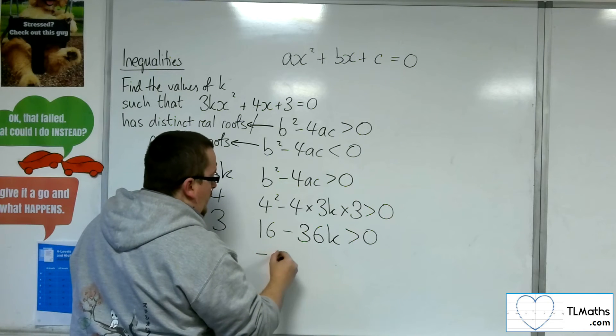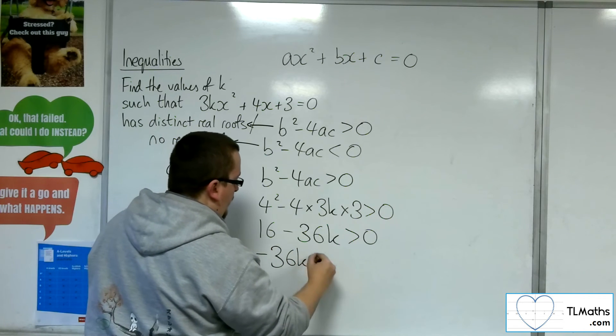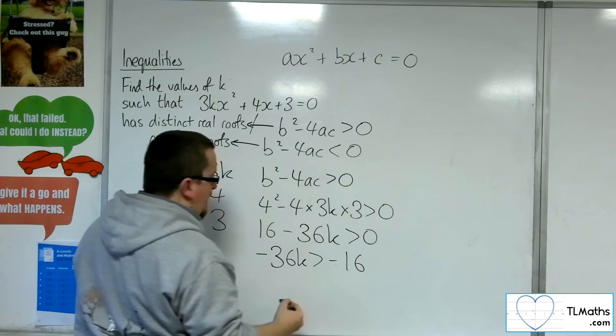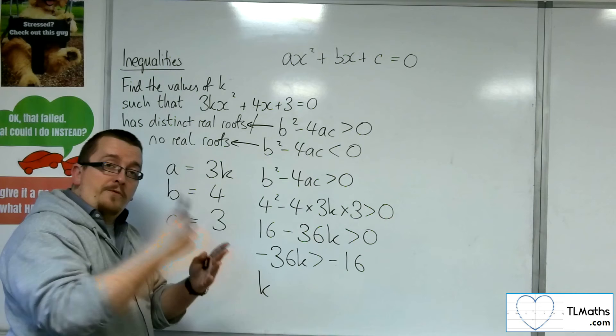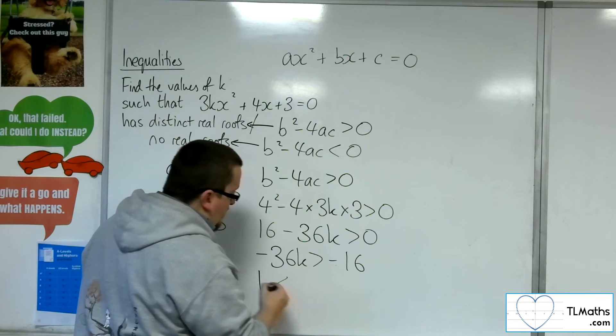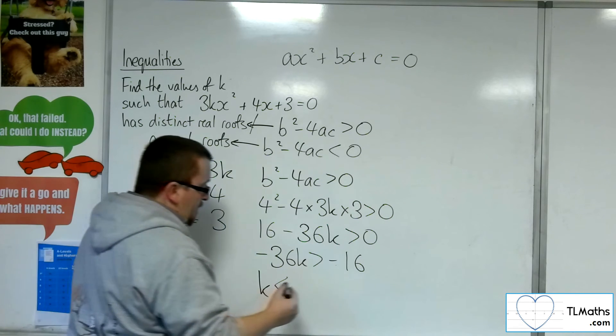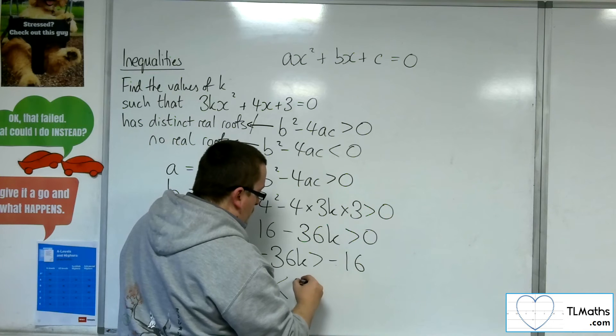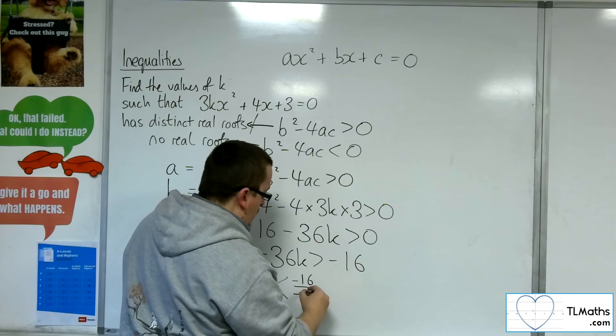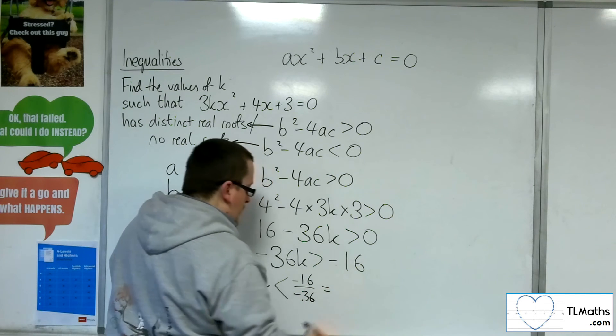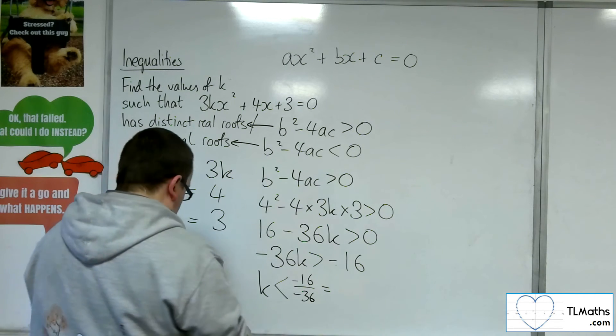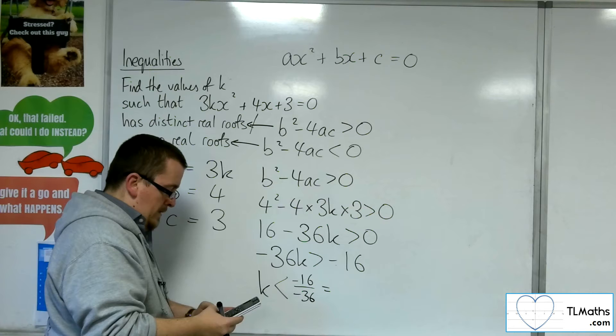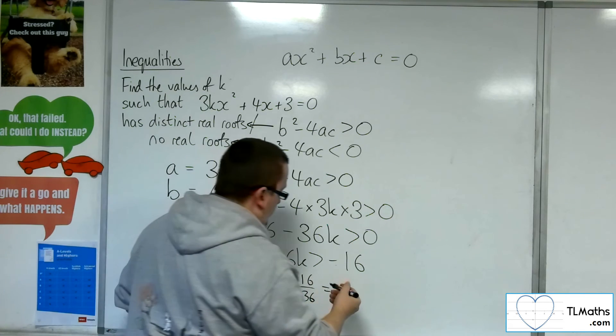Now, if I take the 16 from both sides, I can then divide both sides by minus 36, and what that's going to do, because I'm dividing by a negative, will reverse the direction of the inequality symbol, leaving me with minus 16 divided by minus 36, so positive 16 over 36, so 16 over 36 gets me 4 ninths.